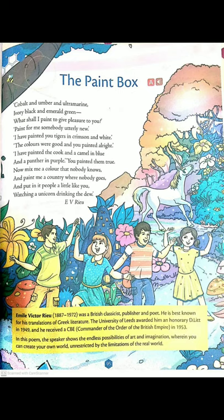The poet says: 'I have painted you tigers in crimson and white, the colors were good and you painted all right.' Crimson is a deep purplish red color. We all know tigers are not purple or red in reality, but here the poet is saying that in his imagination he wants to do something different, something not real. The friend confirms: yes, the colors were very good and you painted really well.